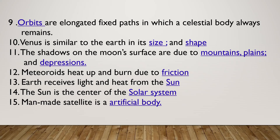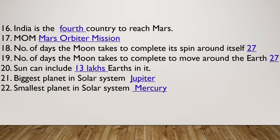Man-made satellites are artificial bodies. India is the fourth country to reach Mars. India's Mars mission is called MOM — Mars Orbiter Mission.